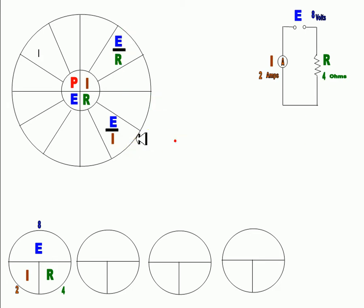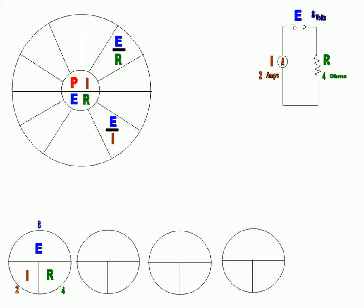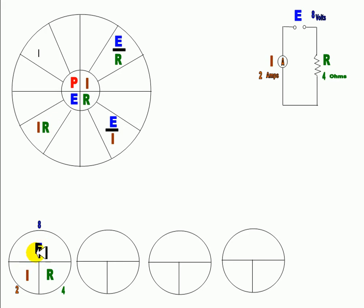Next, we have I times R, which is 2 times 4, which is 8. So that is equal to the voltage. Voltage is on the third quadrant, so we're going to put here the I times R. I times R goes right there. And you can see that everything is filling in — three formulas already done.